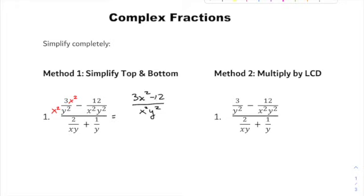Those can't be combined, so mission accomplished there. In the denominator you have 2 over xy plus 1 over y. Multiply that second term by x so both share the denominator xy, giving you 2 plus x over xy.